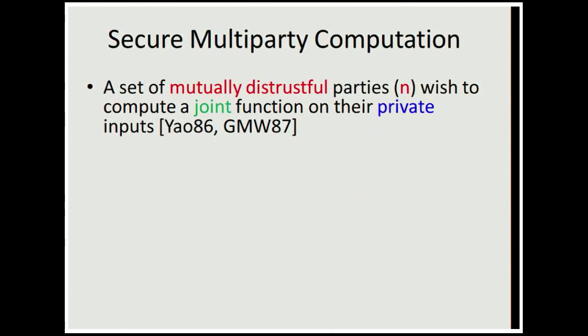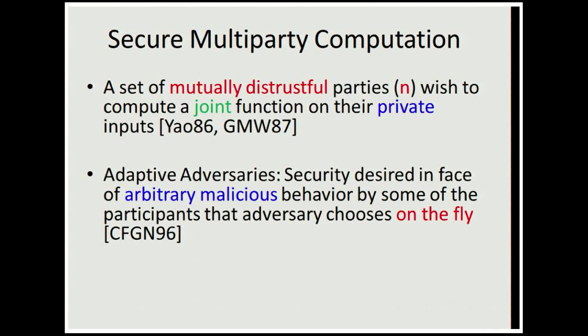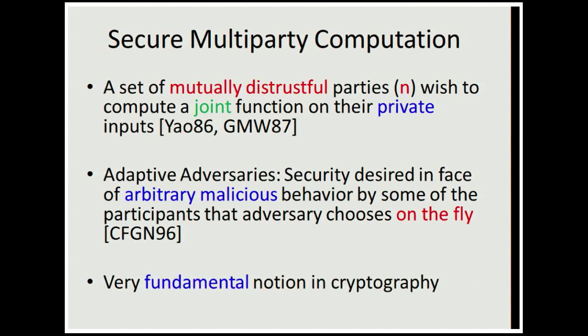Let me start by giving the basic outline of what multiparty computation is. Multiparty computation allows a set of mutually distrustful parties to compute a function on their private inputs. The solution was introduced by Fayyau in the setting of two parties and then extended to multiparty by GMW. We're going to consider the setting of adaptive adversaries, where the adversary has the ability to corrupt parties on the fly. It can look at what is happening in the protocol, and based on what it has seen, it can choose to corrupt parties. This notion was introduced and formalized by CFGN in 1996, and it's had a lot of implications in different areas in cryptography.